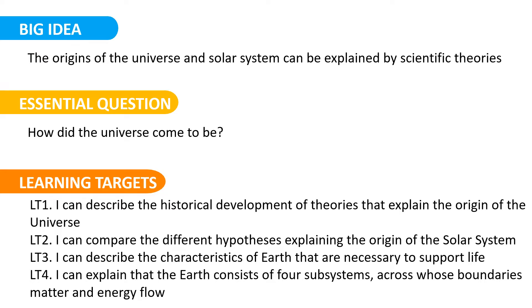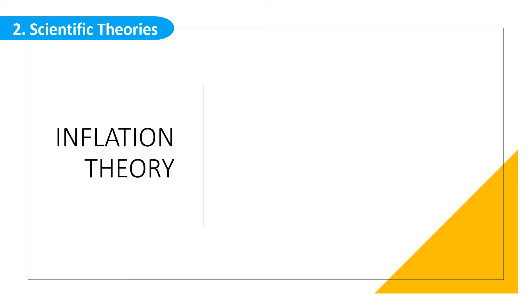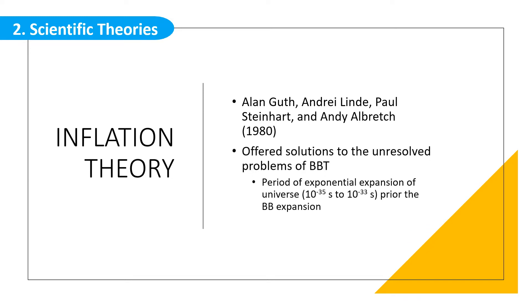For the next theory, we have the inflation theory. The inflation theory, proposed by Alan Guth, Andre Linde, Paul Steinhardt, and Andy Albrecht in 1980, offered solutions to the unresolved problems revolving the Big Bang Theory. The inflation theory proposed the period of exponential expansion of the universe estimated to have happened 10 to the negative 35 to 10 to the negative 33 seconds. This is prior to the more gradual Big Bang expansion.